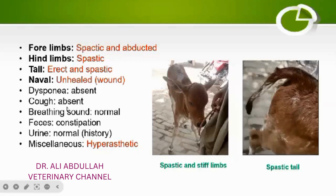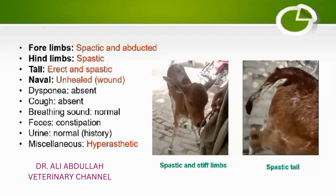One important finding was hyperesthesia — this animal was hyper-responsive to touch, sound, and light. When I touched this animal during physical examination, it started convulsions, indicating hyperesthesia to touch. When I made a noise near the animal, it again started convulsions, indicating hyperesthesia to sound. This hyperesthesia clearly indicates that this calf is suffering from some sort of nervous disorder.